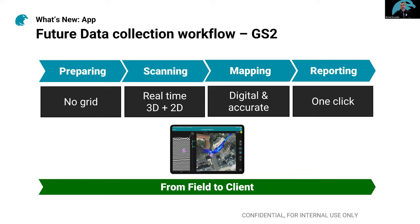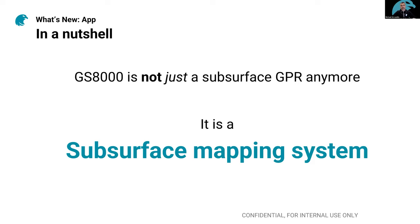We suggest you just go over there and start scanning. It's real-time 2D and 3D scanning displayed directly on your screen. You don't need to go to the office after that. You have everything on the field — you can collect data, see everything on the path, then report or export it and send to a customer or partner with just a click. From the field to the client, without drawing a grid or going to the office to post-process. The new version of the GS-8000 is not just a ground-penetrating radar system — we call it the subsurface mapping system.